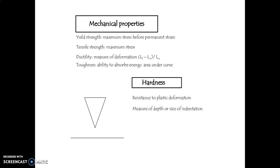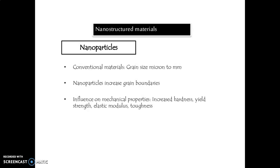The mechanical properties of a particular nanomaterial will be dependent on the grain size — from micron to mm. This is the conventional material. When using conventional material, as the grain size changes from micron to mm, the property will change. But here, nanoparticles increase the grain boundaries, and the mechanical properties also vary with the grain.